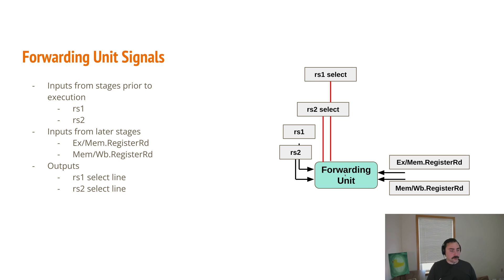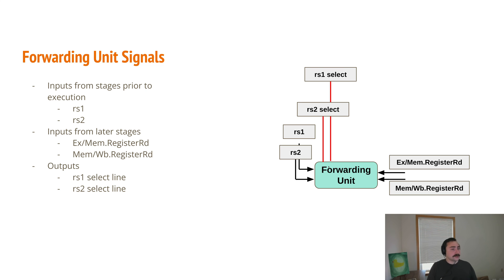The output from our forwarding unit is the select lines for those multiplexers — which source we're selecting for RS1 and which source we're selecting for RS2. One of our later stages might be writing to RS1, another might be writing to RS2, so we need to know information like that to make this forwarding decision.